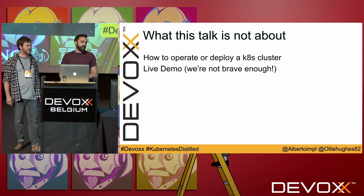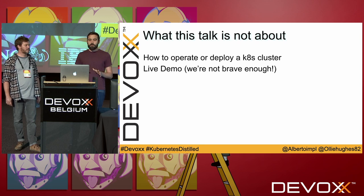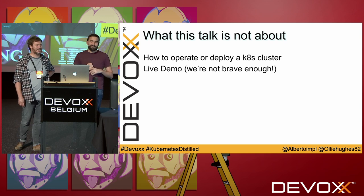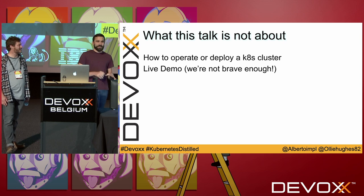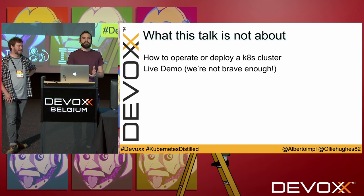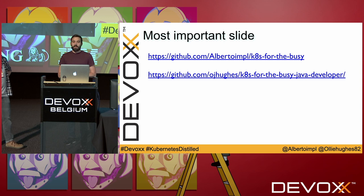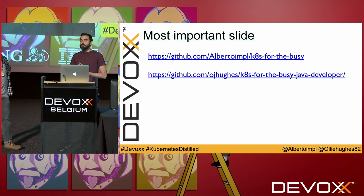Some things you're not going to see in this talk: how to operate or deploy a cluster, and we're not going to do any live demos because we're not brave enough. This is the first time we've done this talk — maybe next time we'll do a live demo, but there are so many moving parts and a lot of things take time. We're just going to explain what we need to get the job done. And this may be the most important slide — here you'll find all the examples we're going to show with all the steps to reproduce them. We created two repos, two ways to do things, and we couldn't even agree on the repo name. We have different opinions and we're going to expose them throughout the talk.